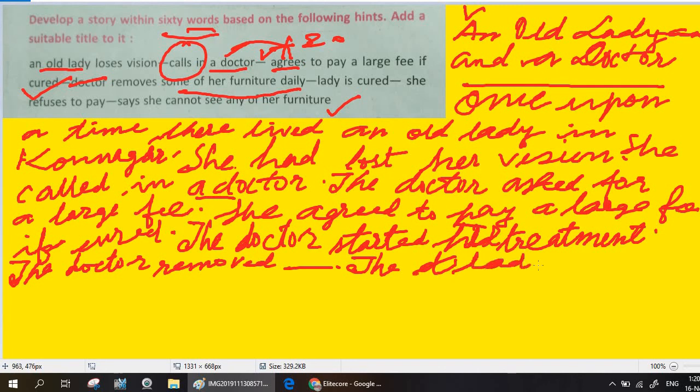The lady—you can say it also—when the lady is cured. Not 'is cured,' okay? At the place of 'is,' you can use 'was.' The lady was cured.